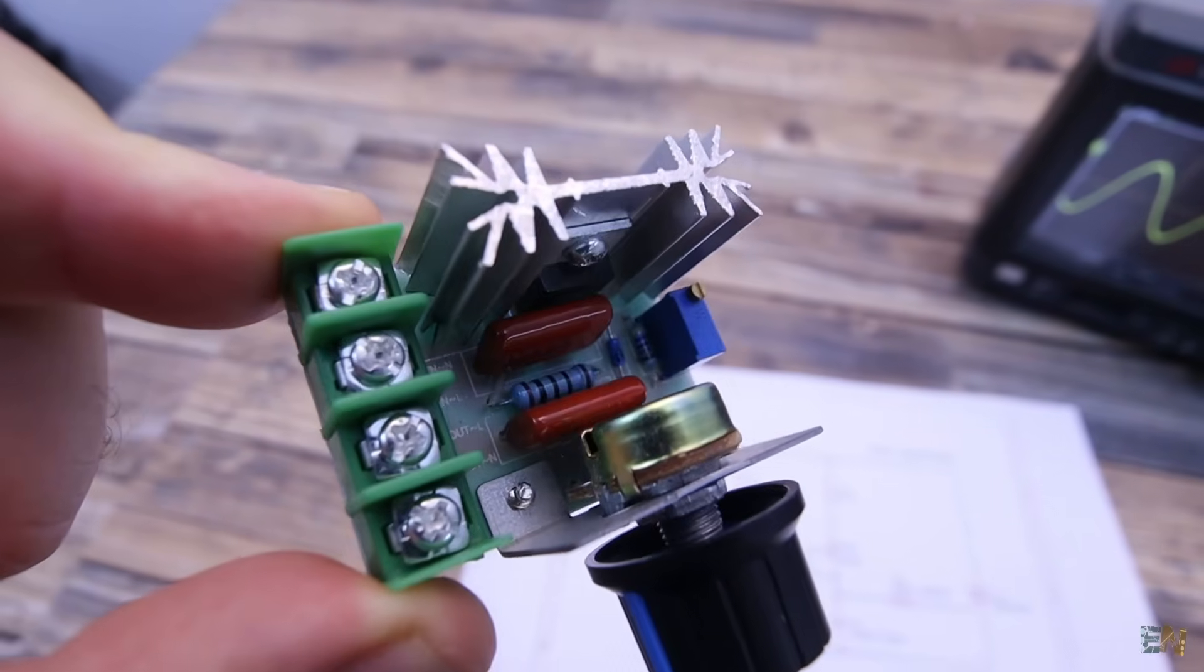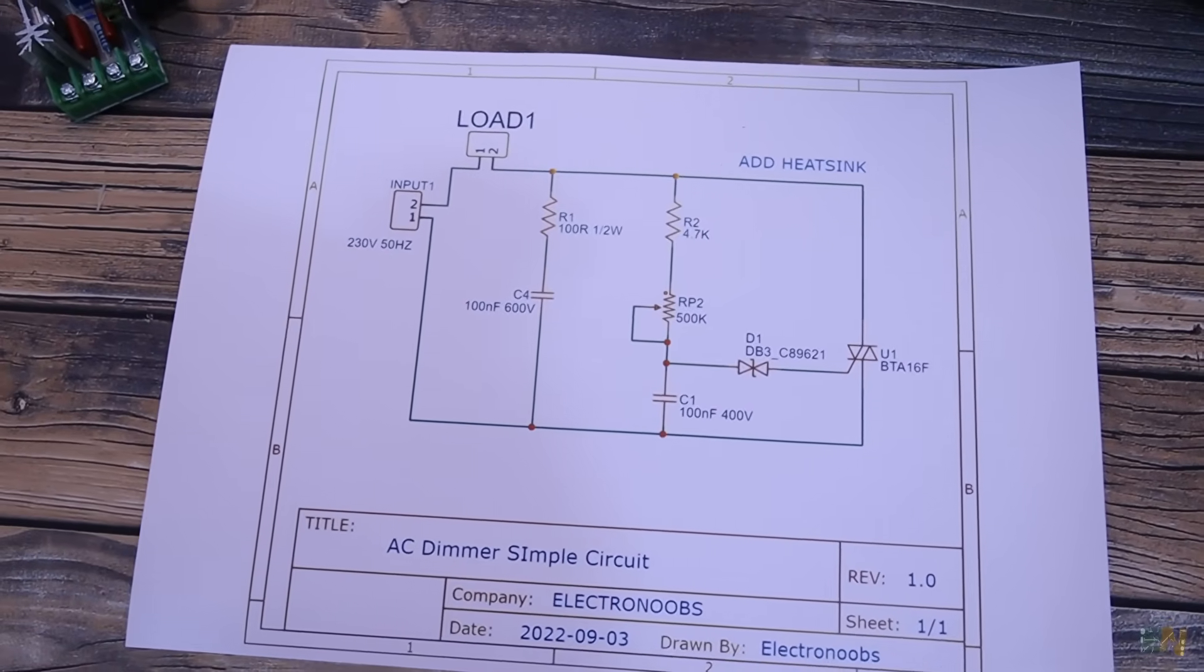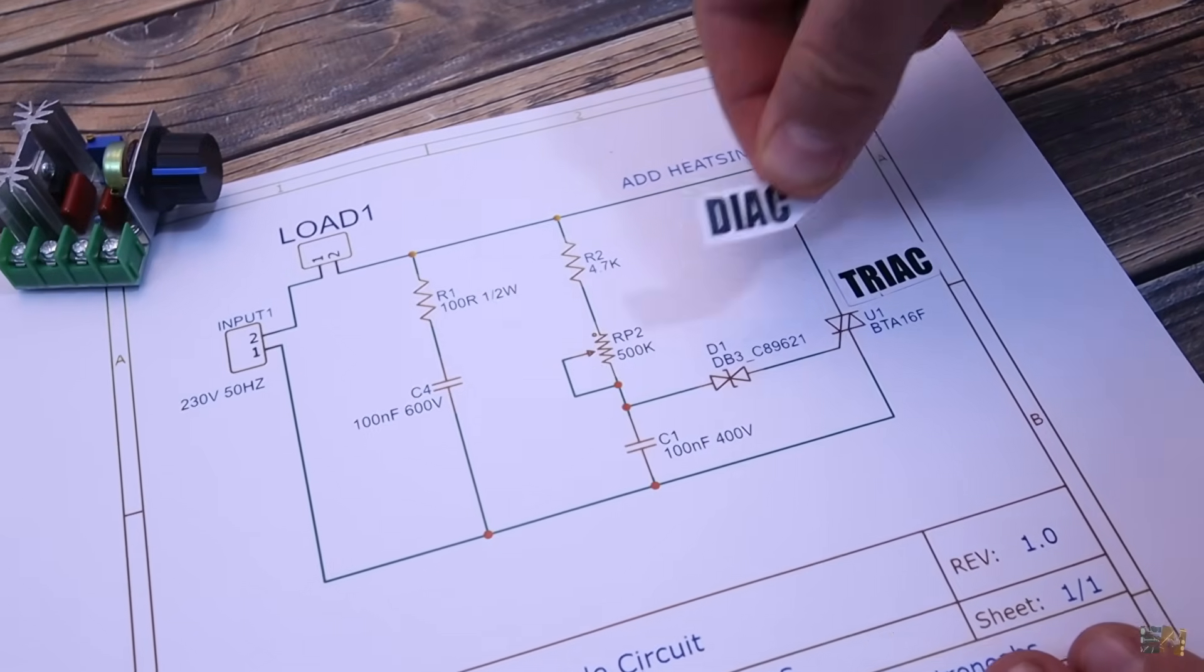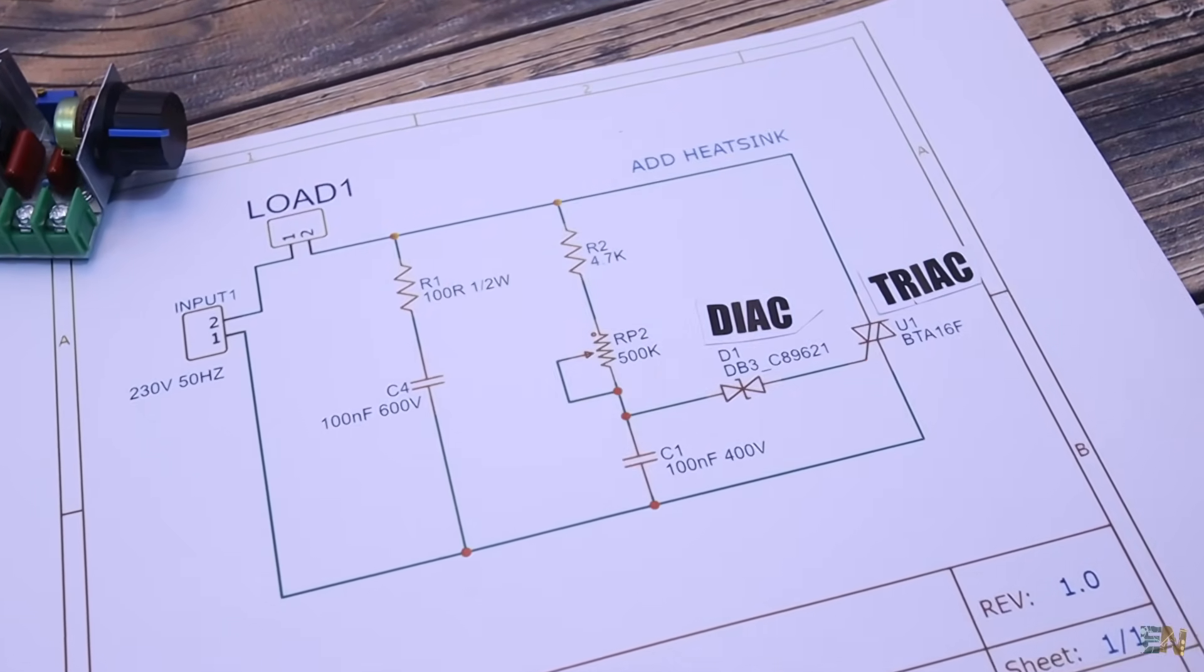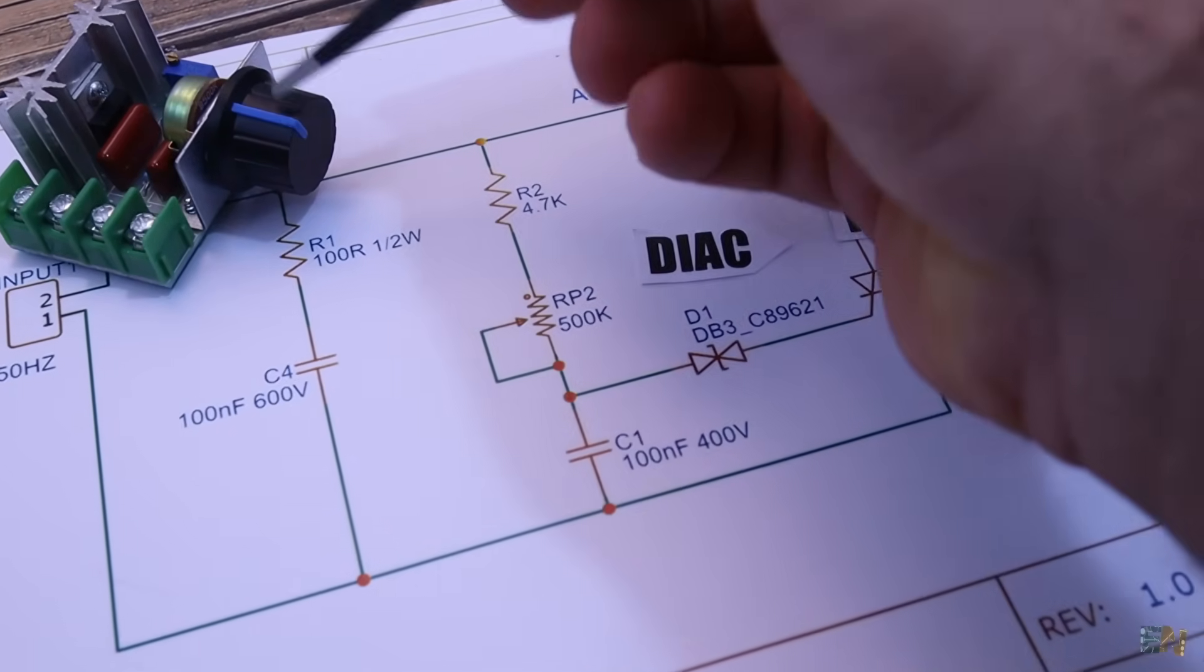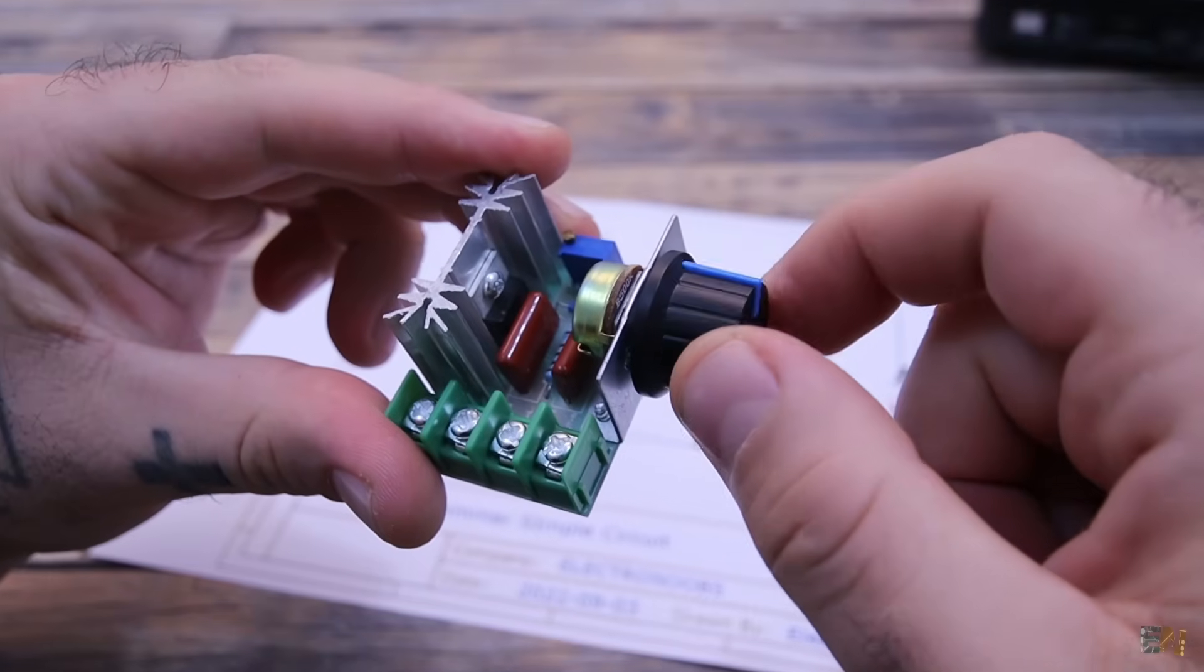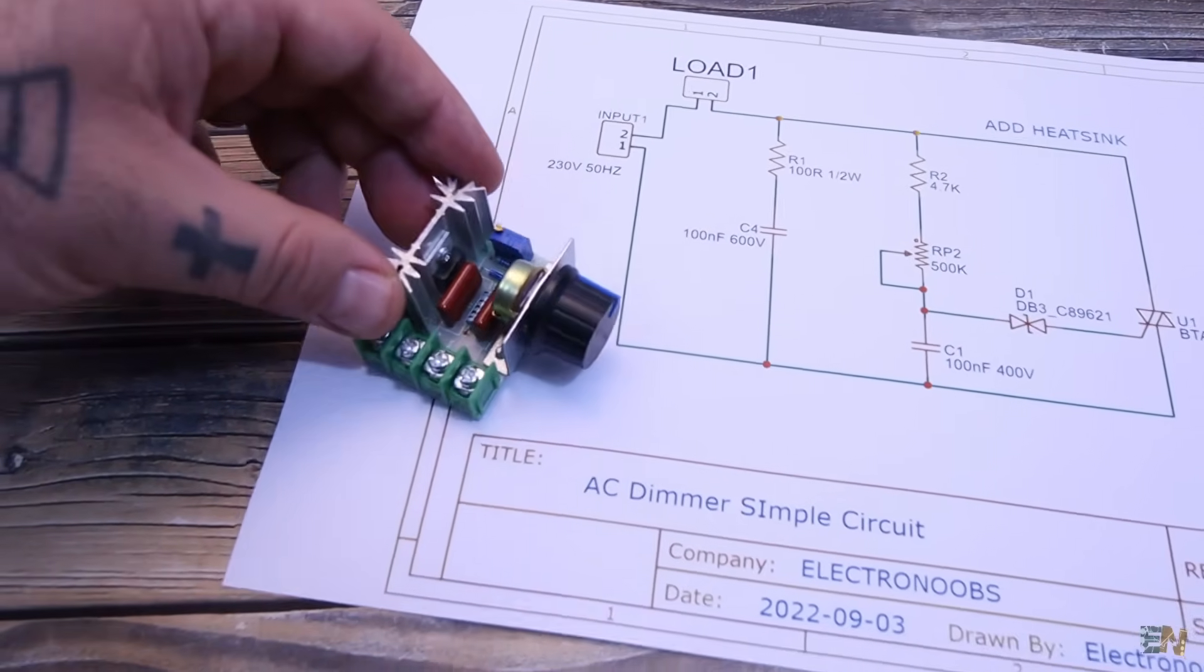Let's start with a very easy circuit, which is this one here. We have the triac, another component that is called a diac and some resistors and capacitors. To change the firing pulse time, we use the potentiometer and that's how we can change the output power. This module is using this exact circuit.